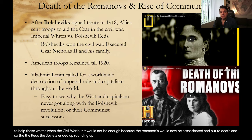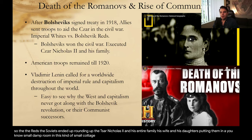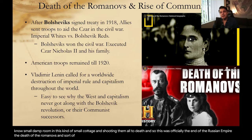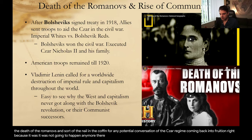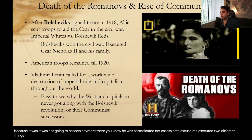The Reds and Soviets ended up rounding up Tsar Nicholas II and his entire family — his wife and his daughters — putting them in a small, damp room in a small cottage and shooting them all to death. This was officially the end of the Russian Empire, the death of the Romanovs, and the nail in the coffin for any potential conversation of the Tsar regime coming back, because he was not assassinated — he was executed. It's two different things.